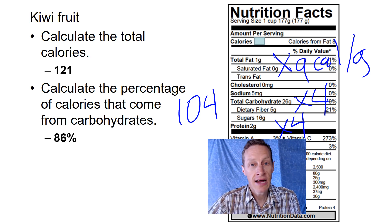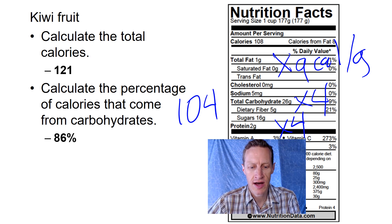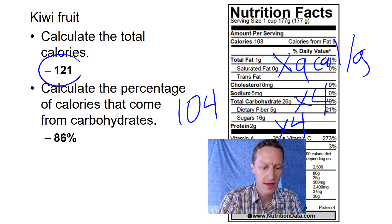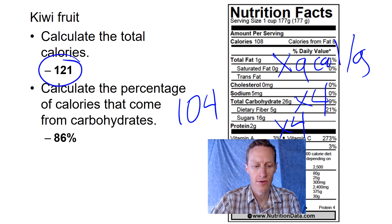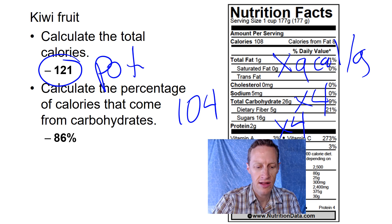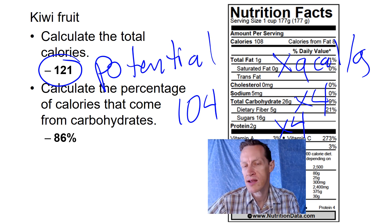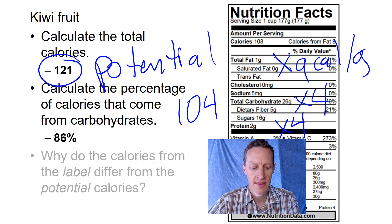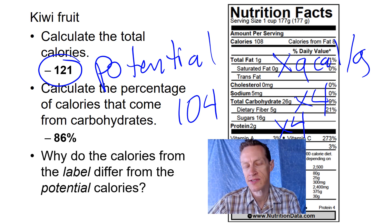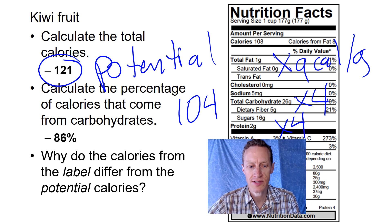Now, if we look at the actual label, this kiwi fruit per cup has 108 calories. You'll notice that's different than the 121 that we calculated here, or what we might also call potential calories. What I'd like you to do is pause the video and answer this question: why do the calories on the label differ from the potential calories that we calculate?